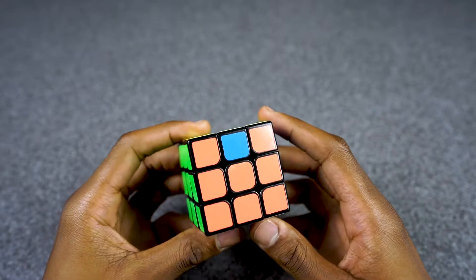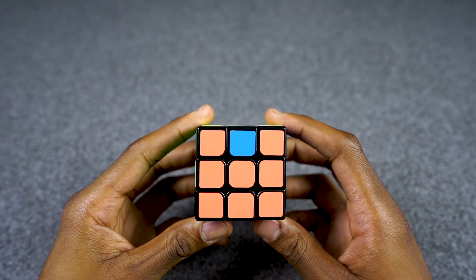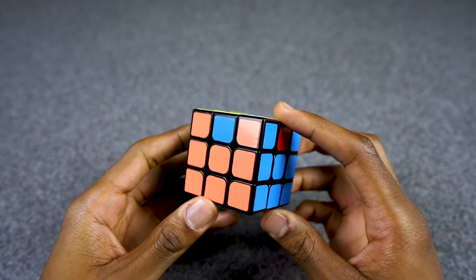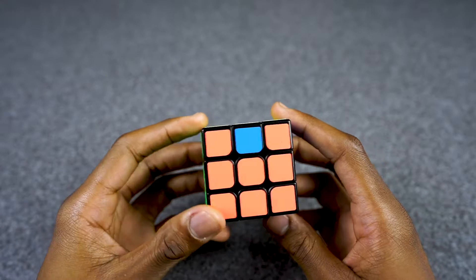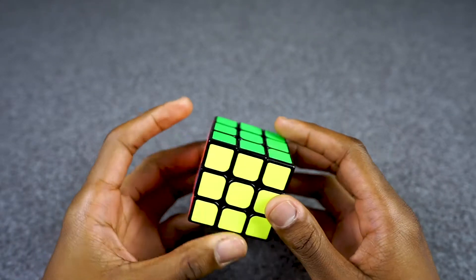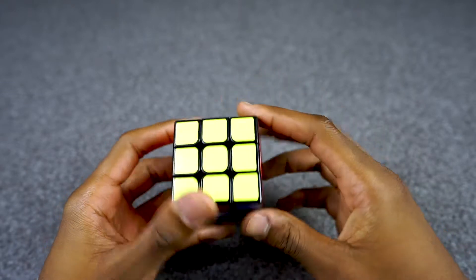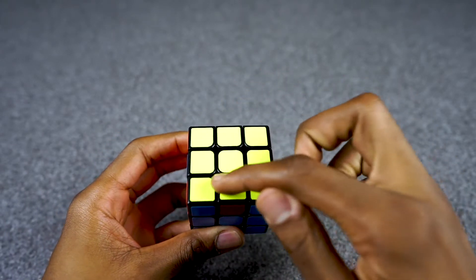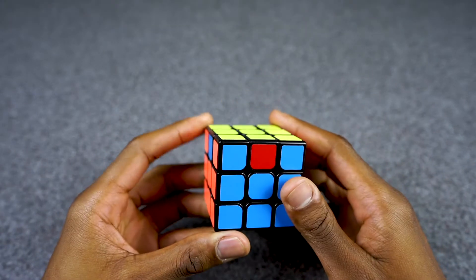Done. So I did the algorithm. I didn't pick if I was going to do a U or U prime, I just did either one and then stuck with that throughout the algorithm. Now I have a desired case where one side is solved and I really only have to worry about these three edges.